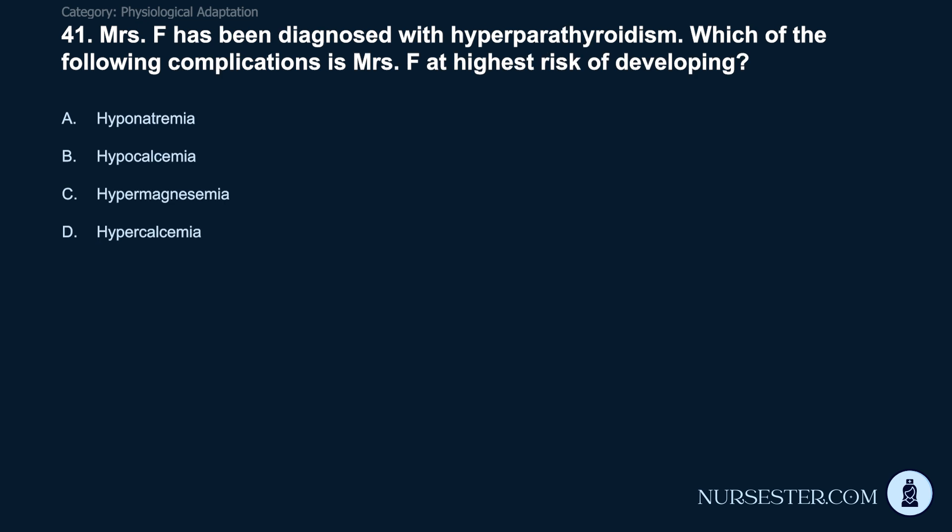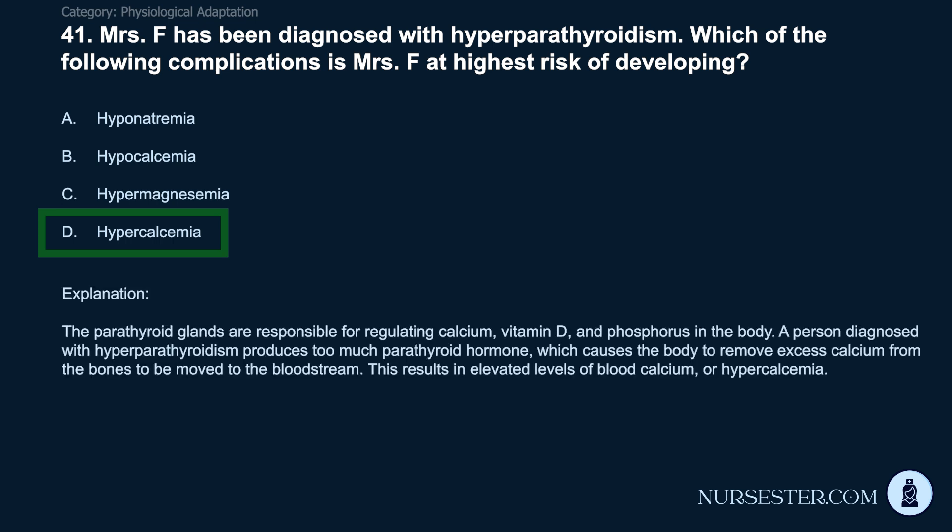Question 41: Mrs. F has been diagnosed with hyperparathyroidism. Which complication is she at highest risk of developing? A) Hyponatremia. B) Hypocalcemia. C) Hypermagnesemia. D) Hypercalcemia. Correct answer: D. Hypercalcemia. The parathyroid glands regulate calcium, vitamin D, and phosphorus. A person with hyperparathyroidism produces too much parathyroid hormone, causing the body to remove excess calcium from the bones into the bloodstream, resulting in elevated blood calcium or hypercalcemia.